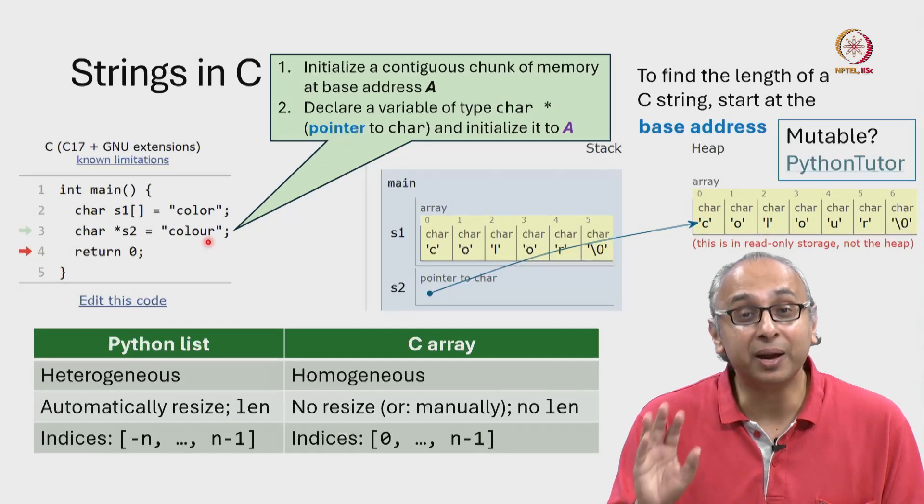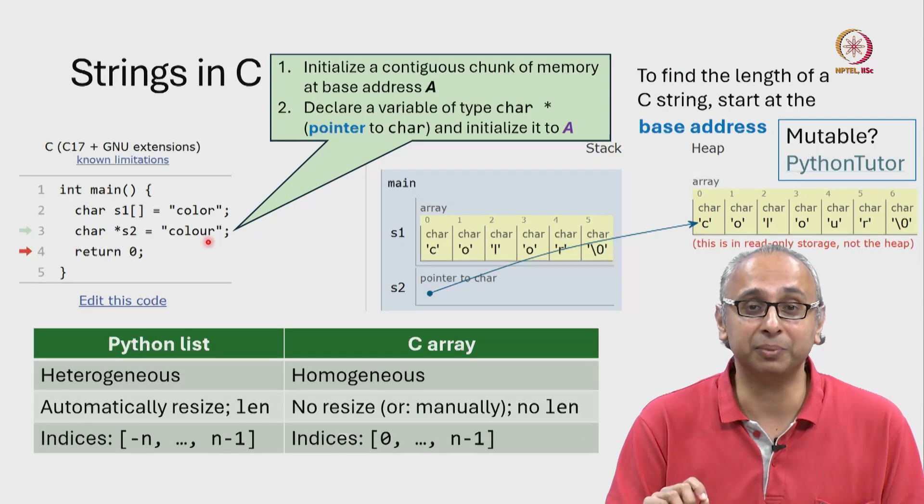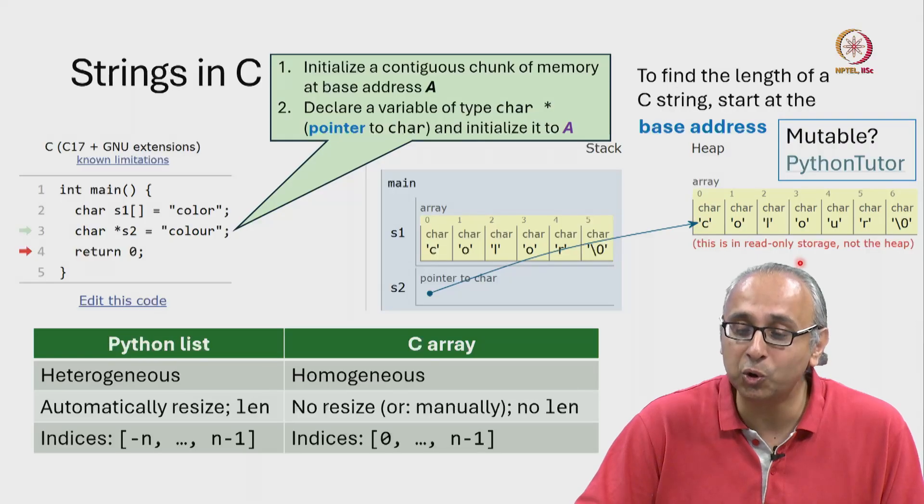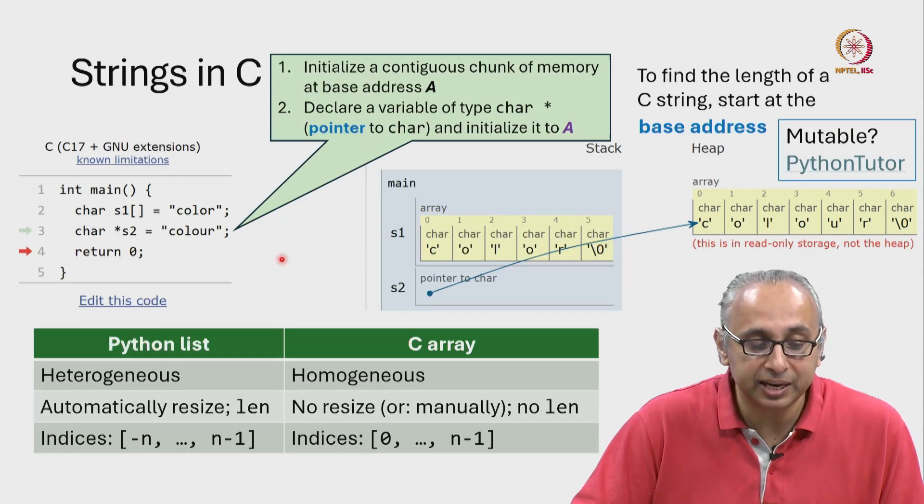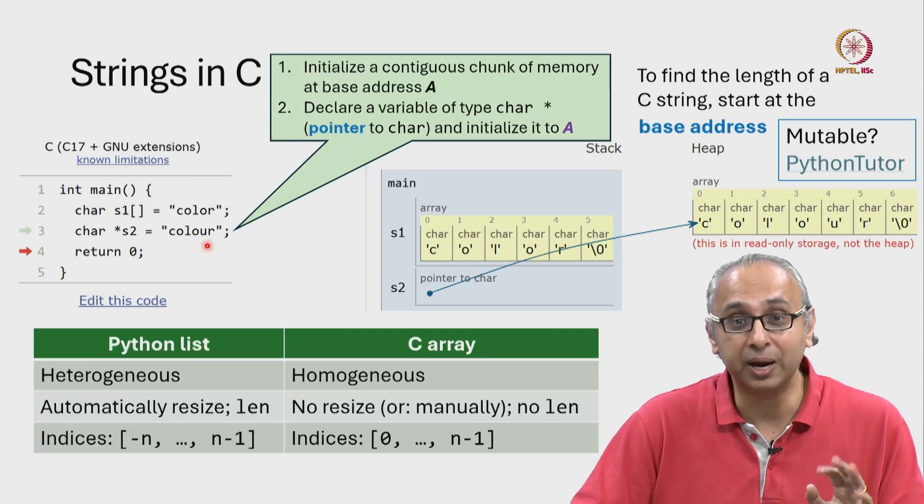Because it turns out one of these strings is mutable and the other is not. Do you remember in Python every string is immutable? You might guess from the fact that this says this is in read-only storage that this version initialized like this is immutable, and you're right.